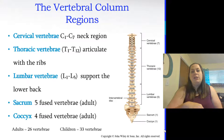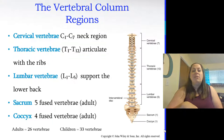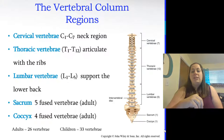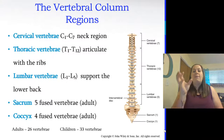The vertebral column is divided into regions: cervical vertebrae C1–C7 (neck region), thoracic vertebrae T1–T12 (which articulate with the ribs), and lumbar vertebrae L1–L5 (lower back support). There's also the sacrum — five fused vertebrae in adults — and the coccyx — four fused vertebrae in adults. Children have 33 vertebrae because the sacrum and coccyx have not yet fused; adults have 26.